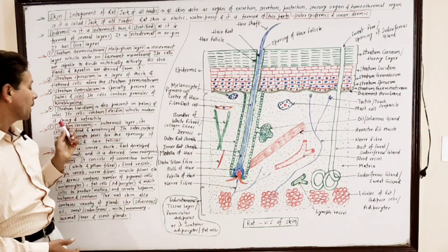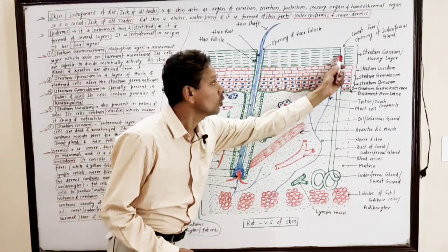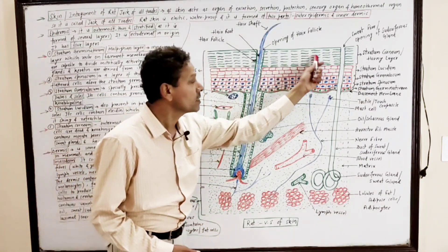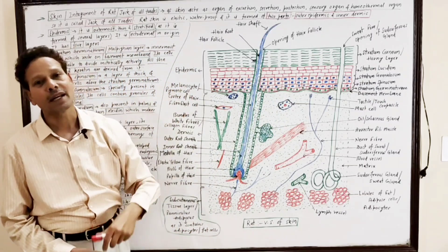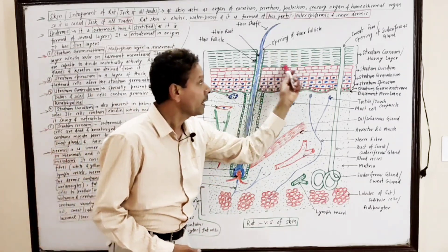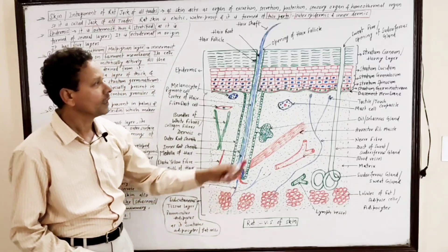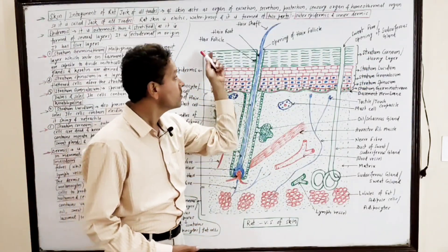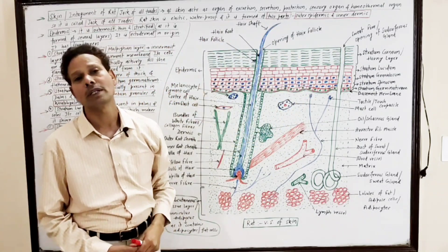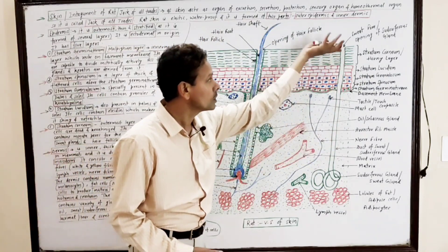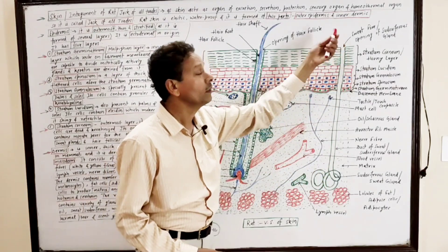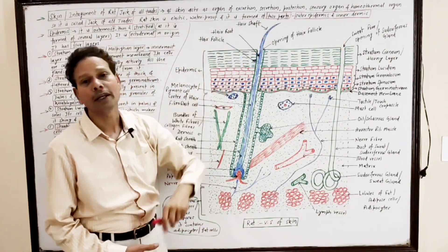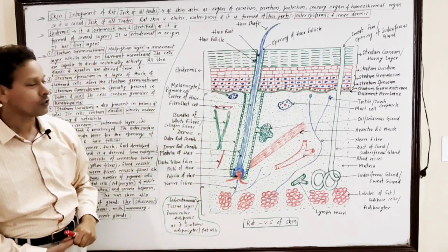The next layer is the stratum corneum, also called the horny layer. This layer consists of dead keratinized cells. Its outer surface consists of minute pores through which the sweat glands open, as well as hair follicles come out.